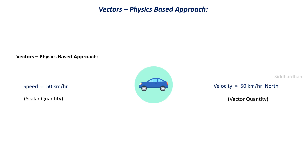In physics we come across several scalar and vector quantities. Force is an example of a vector quantity where we deal with both magnitude and direction. Mass is a scalar quantity — we just state its magnitude. Weight, on the other hand, involves the direction in which gravitational force acts on the object, so it includes both magnitude and direction, making it a vector quantity.